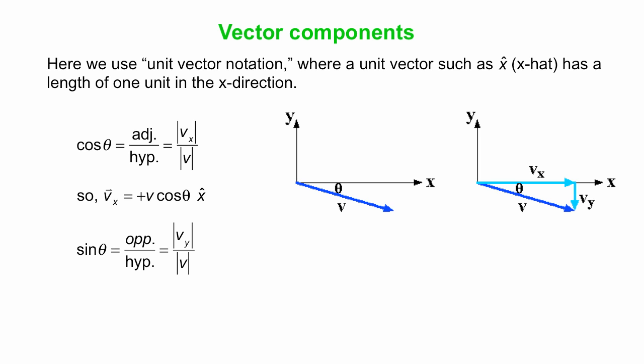Similar thing for the y, sine theta is opposite over hypotenuse, we'll do magnitudes, Vy over V, all magnitudes, solve for Vy. Vy has a magnitude of V sine theta, and it's in the negative y hat direction, negative y direction, so we'll add minus V sine theta y hat, we'll write that out as Vy. And of course, Vx plus Vy added as vectors, get you V. And there it is.